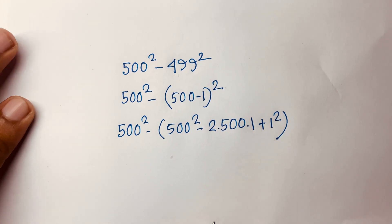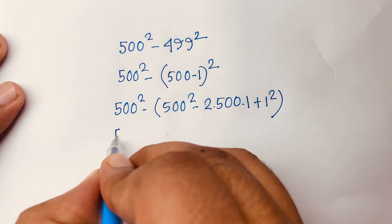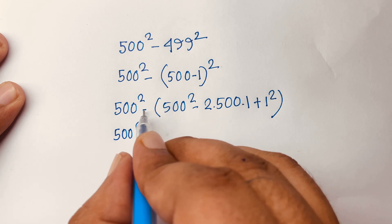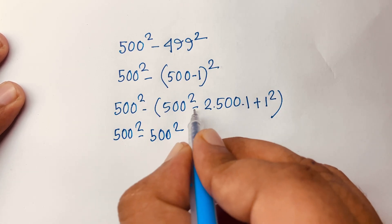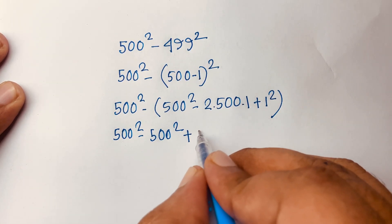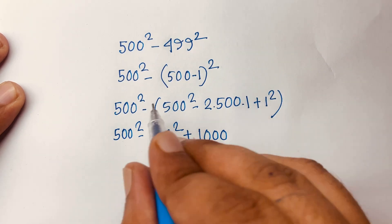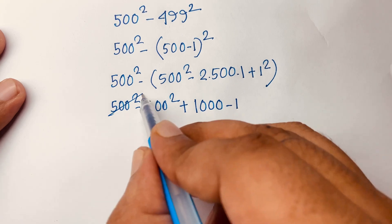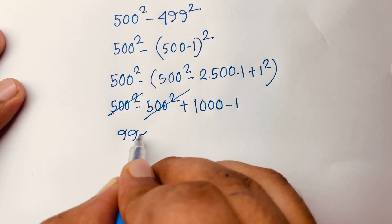Expanding: 500 square minus (500 minus 1) whole square gives 500 square minus 500 square plus 2 times 500 minus 1. The 500 square terms cancel, leaving 1000 minus 1, which equals 999. This is our final answer for the first method.